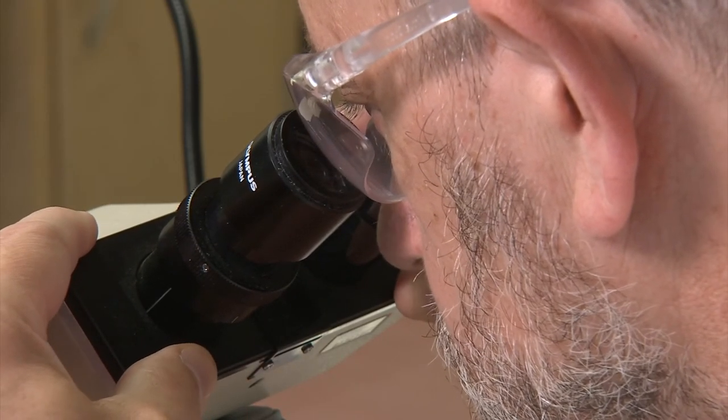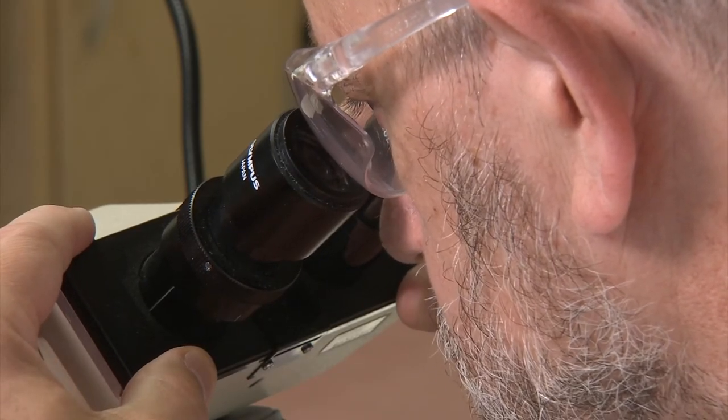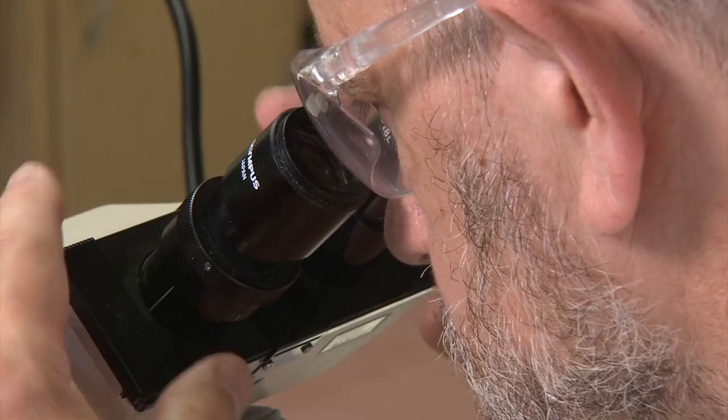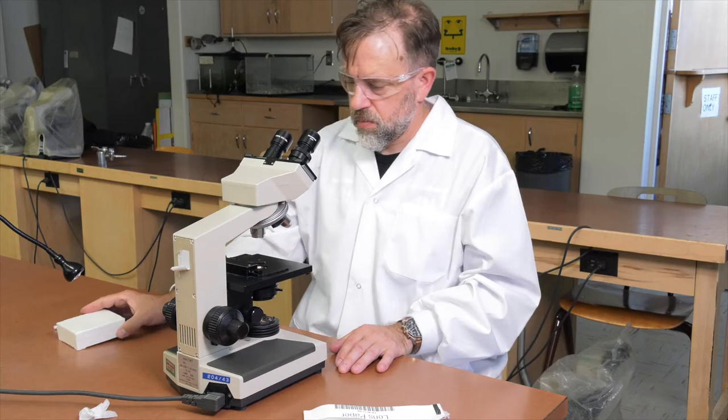This will look like a single circle of light when properly aligned, with no shadows or overlaps. Write down the interpupillary distance so that you can make this adjustment more easily in the future.